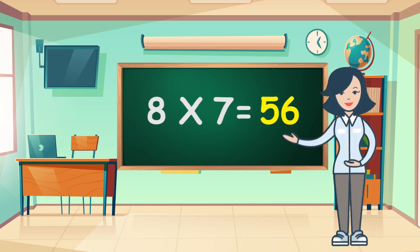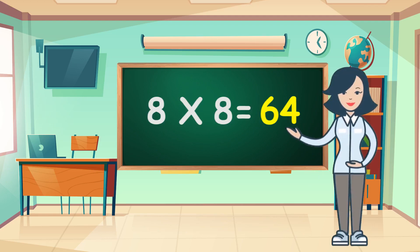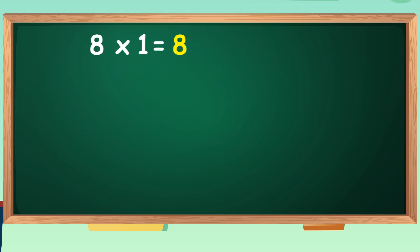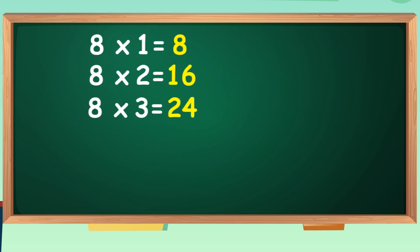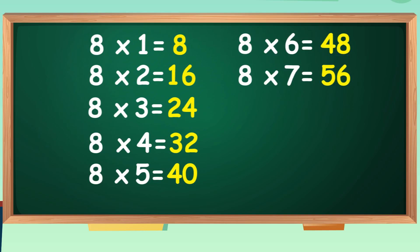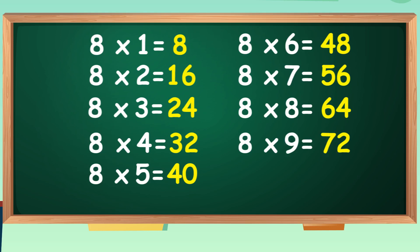Eight sevens are fifty-six. Eight eights are sixty-four. Eight nines are seventy-two. Eight tens are eighty. Eight tens are eighty. Eight ones are eight. Eight twos are sixteen. Eight threes are twenty-four. Eight threes are twenty-four. Eight fours are thirty-two. Eight fours are thirty-two. Eight fives are forty. Eight fives are forty. Eight sixes are forty-eight. Eight sixes are forty-eight. Eight sevens are fifty-six. Eight sevens are fifty-six. Eight eights are sixty-four. Eight eights are sixty-four. Eight nines are seventy-two. Eight nines are seventy-two. Eight tens are eighty.